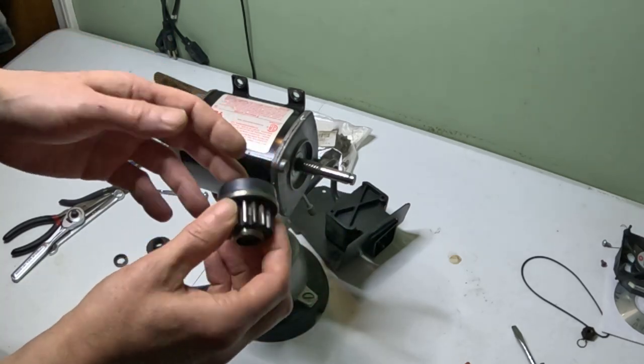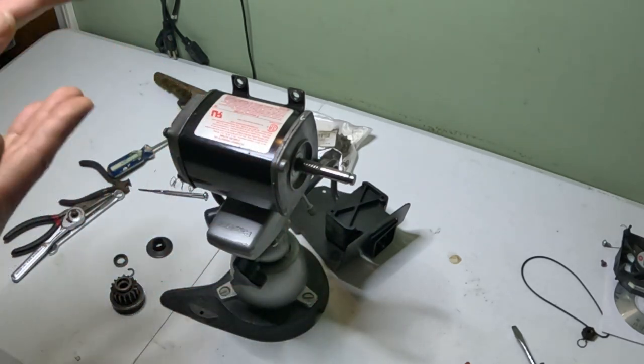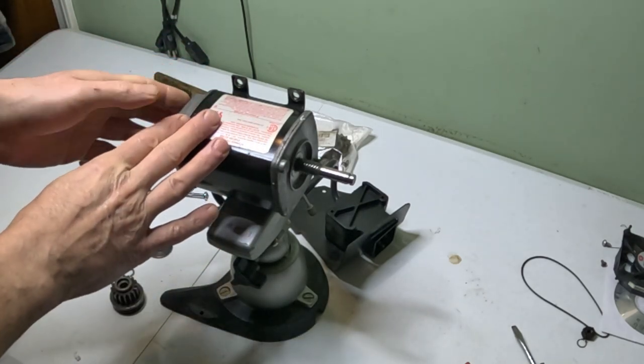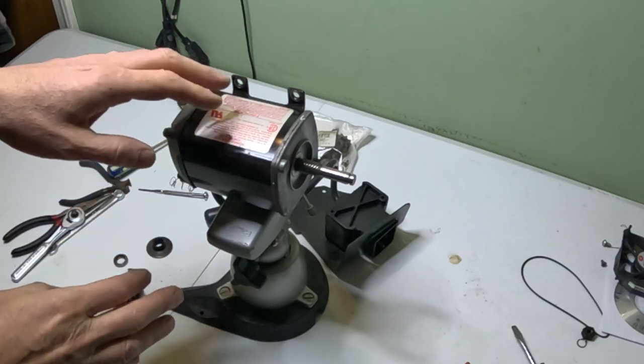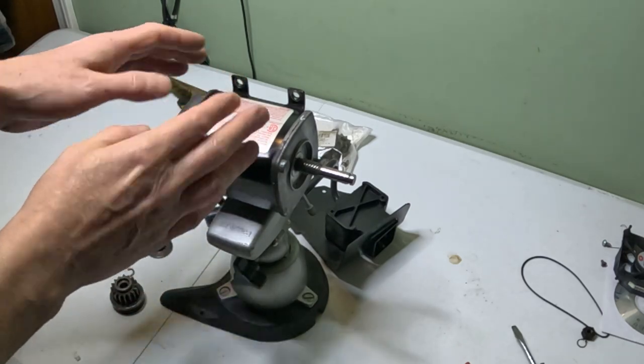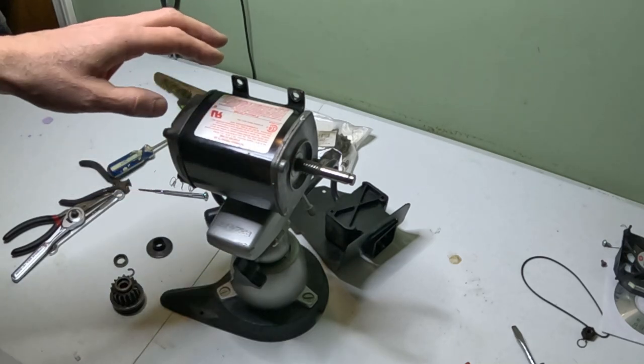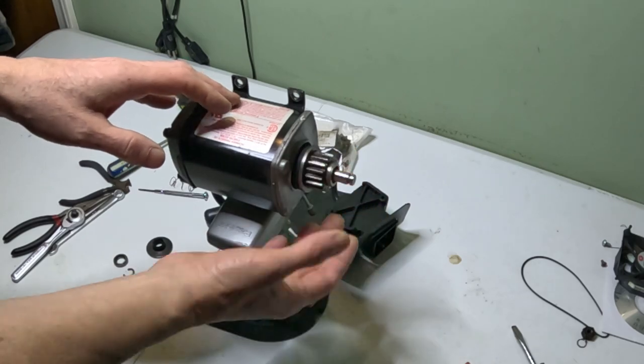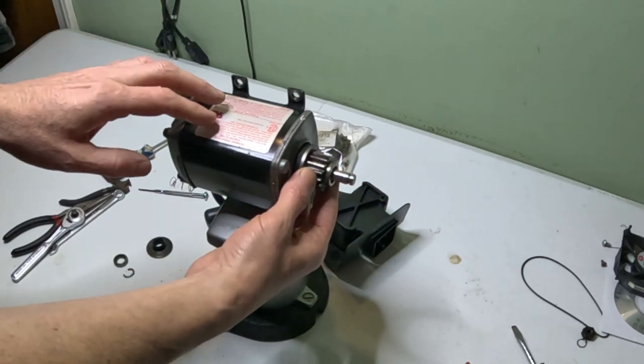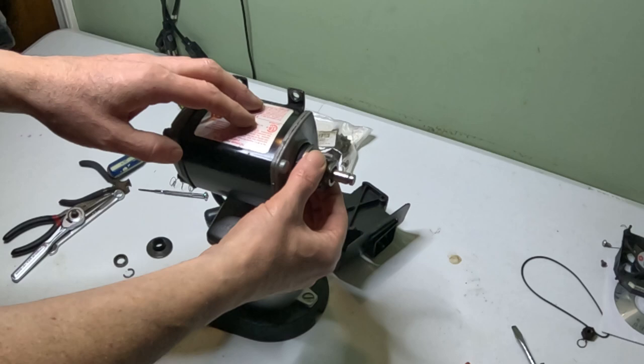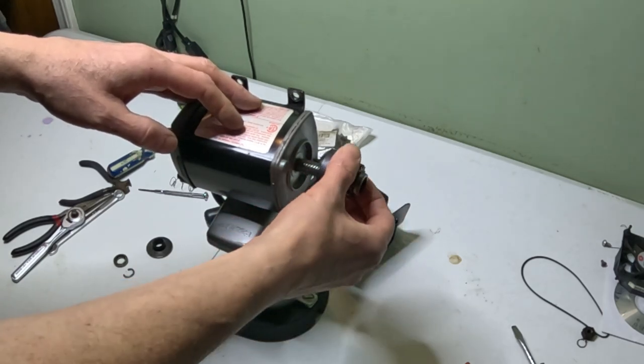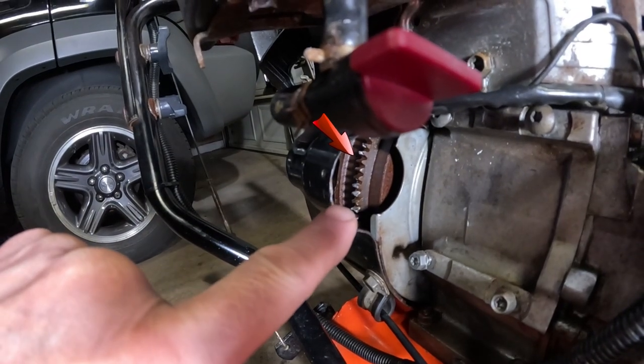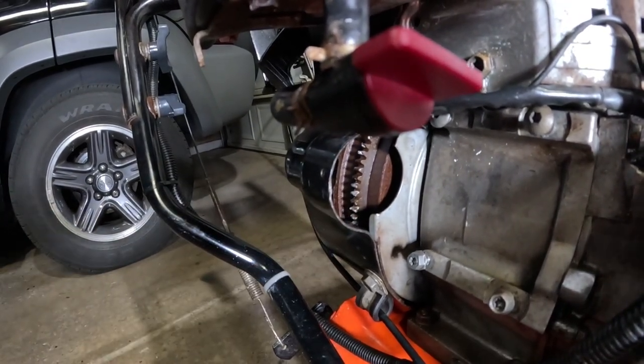I'm going to go over some things to look for before you end up tossing a starter away. We don't have to open this one up because we know it's functioning. Basically how this works is when you engage the button, there's a worm gear here and that will force this gear out to engage the flywheel. Once the engine starts, this will retract back to this position.